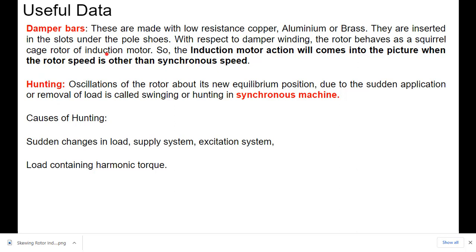And damper bars. Damper bars are used to place in synchronous machine. How damper bars look like? These are made with low resistance copper or aluminum or brass material. These are inserted in the slots under pole shoes. With respect to damper winding, the rotor behaves as a squirrel cage rotor of induction motor.